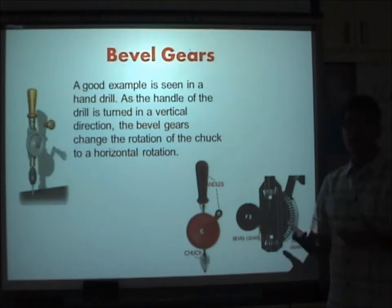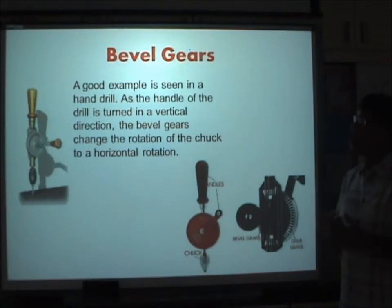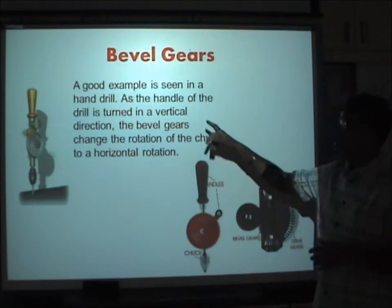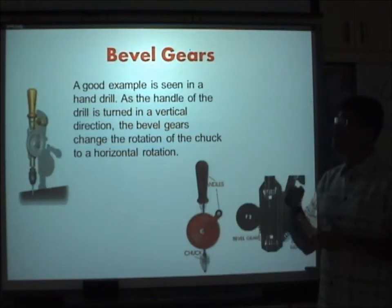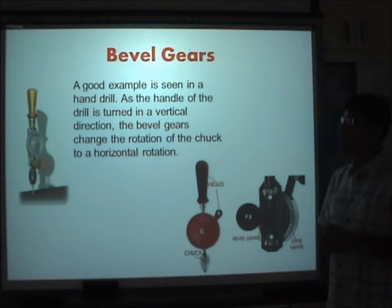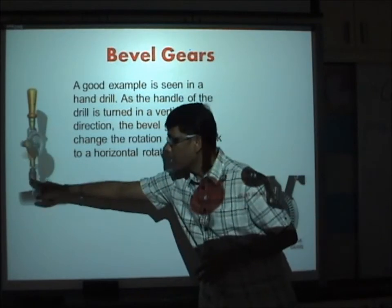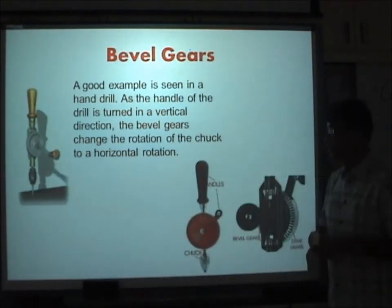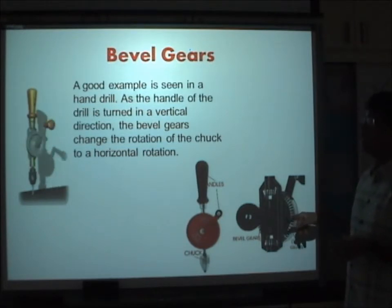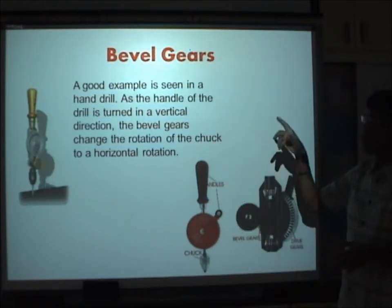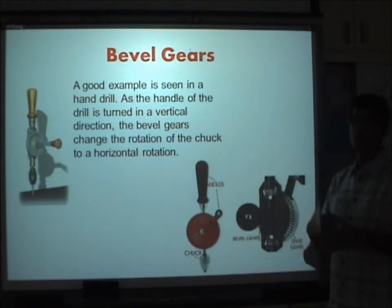A good example of bevel gears in use is the hand drill. The handle of the drill is turned in a vertical direction, and the bevel gears change that rotation to drive the chuck in a horizontal direction. The internal components clearly show how bevel gears transform vertical rotation into horizontal rotation.